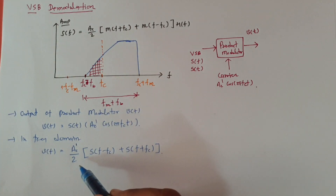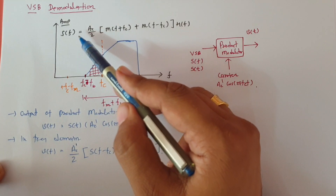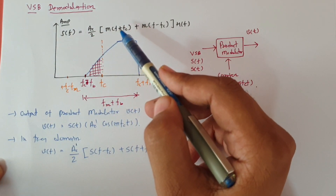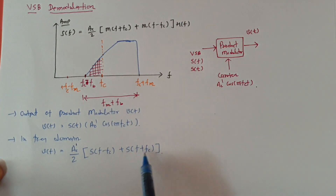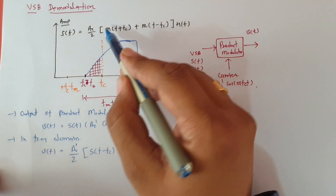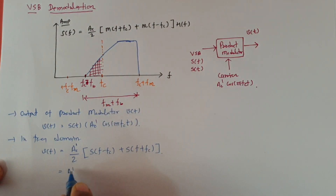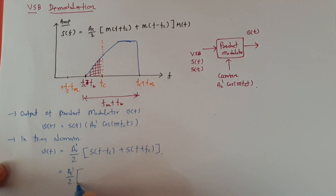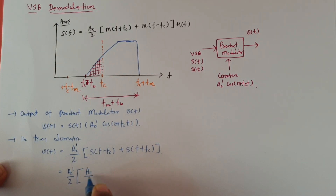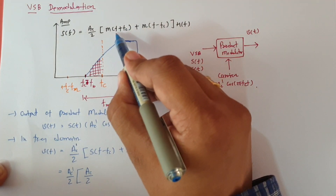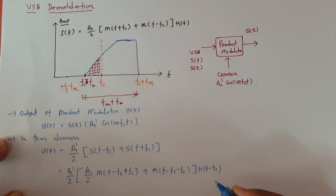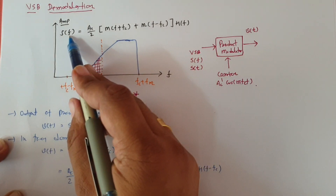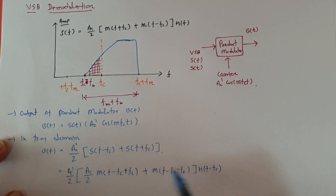Now observe that S(F) = (AC/2) × [M(F + FC) + M(F − FC)] × H(F). If I substitute this into V(F) and just focus on this term, for S(F − FC) I replace F with F minus FC, and for S(F + FC) I replace F with F plus FC.